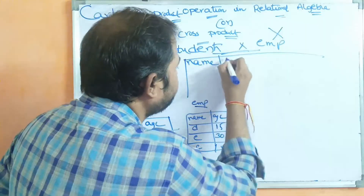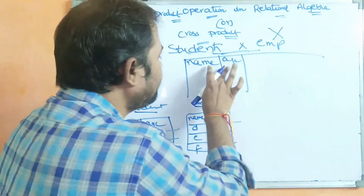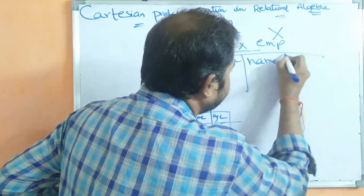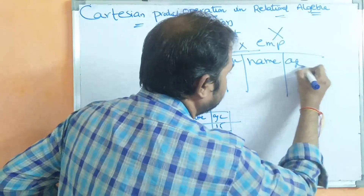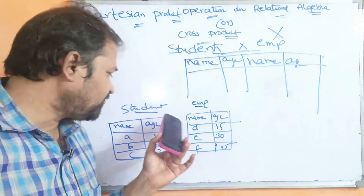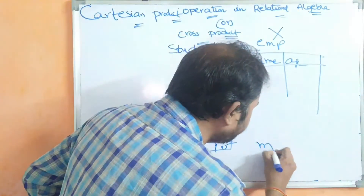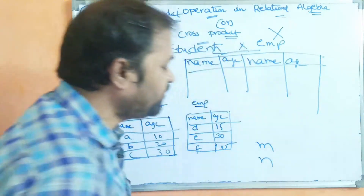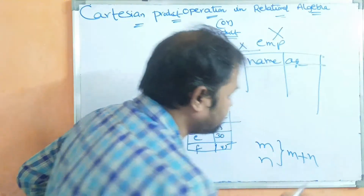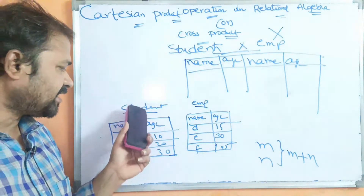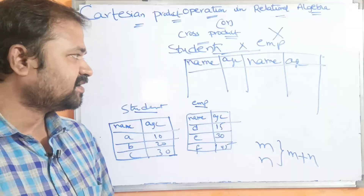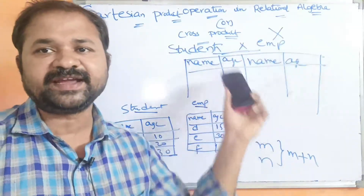The four attributes are: name and ID from the student relation, and name and ID from the employee relation. The key point is: if R1 contains M attributes and R2 contains N attributes, then R1 cross R2 contains M plus N attributes. Here, the first relation has two columns and the second relation has two columns, so R1 cross R2 contains four columns.